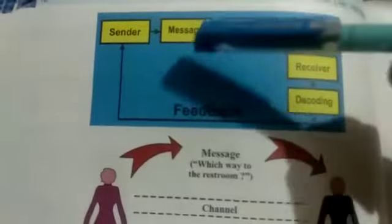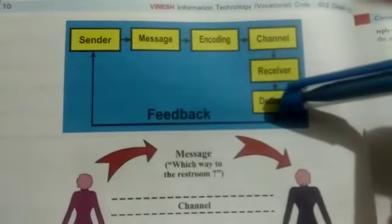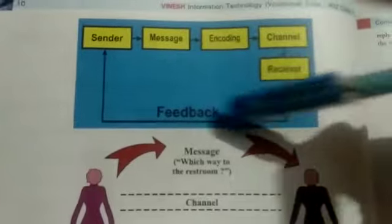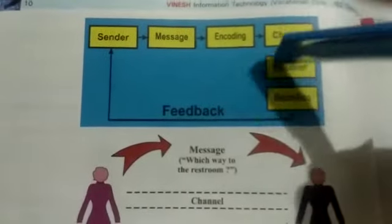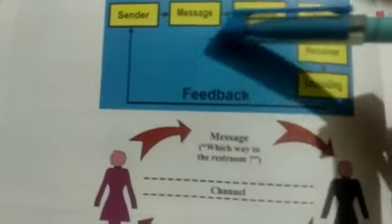Look at this diagram here. These are the elements of the communication cycle - how the communication process will work in a cyclic way, in a continuous mode. First of all is a sender. Sender means who wants to communicate.